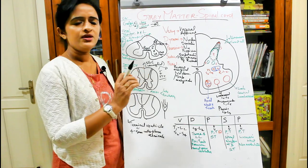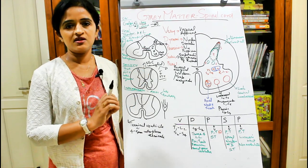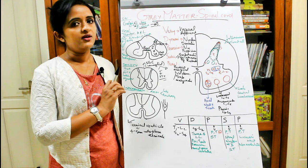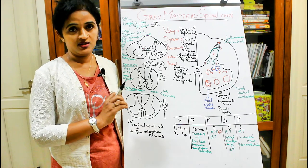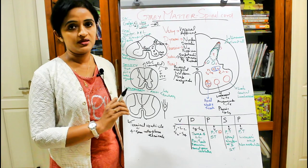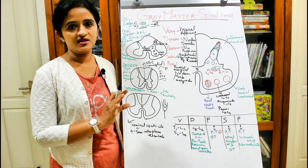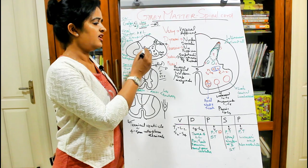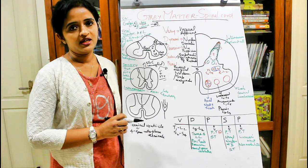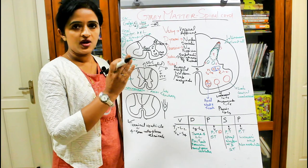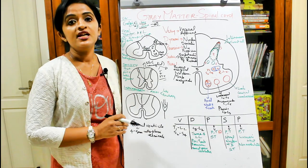Why is it called substantia gelatinosa? Gelatinosa means a transparent part where there is a limited number of myelinated nerve fibers, making it somewhat transparent in nature. Mostly you will get neuroglia cells around the central canal in this region.